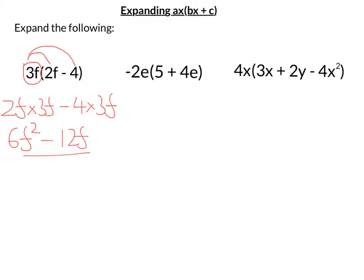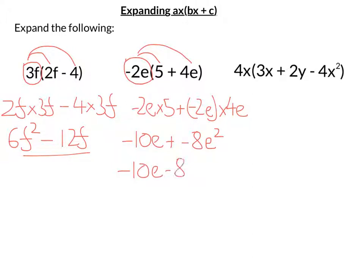Let's do the second one. This time I've got negative 2e that I'm timesing by both terms inside. So I'm going to get negative 2e times 5 plus negative 2e times 4e. So negative 2e times 5 is going to be negative 10e. On the next bit, I've got negative 2 times 4, if I just do the numbers first. So that's negative 8. And e times e is e squared. And I've got a plus and a minus in the middle, so I can just change this to negative 10e minus 8e squared.